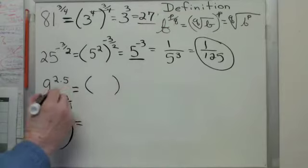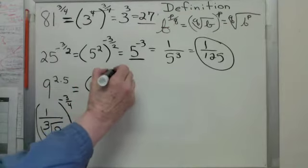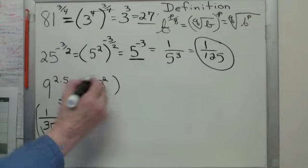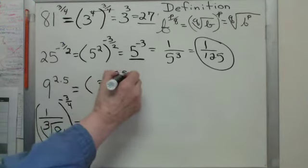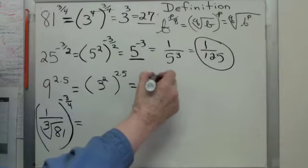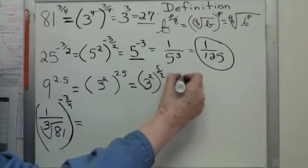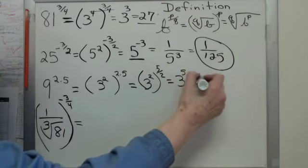9 to the 2.5. Well, the 9 part is easy, that's 3 squared. What do I do to the 2.5? Any ideas? Yeah, make it a fraction. 3 squared to the 5 halves. 3 to the 5th, 243.